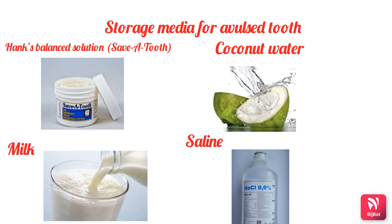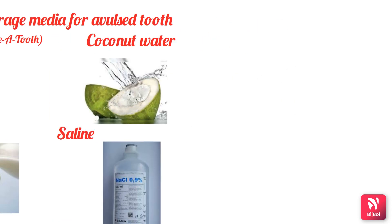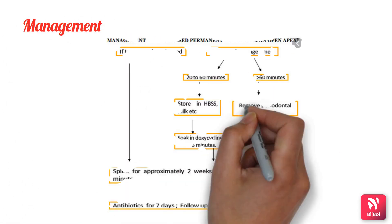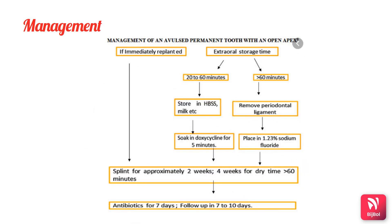For avulsed teeth with an open apex, if immediately replanted, the tooth is splinted for approximately two weeks — or four weeks for dry time greater than 60 minutes — and antibiotics are prescribed with follow-up at seven to ten days.